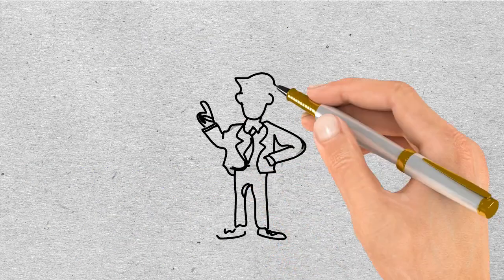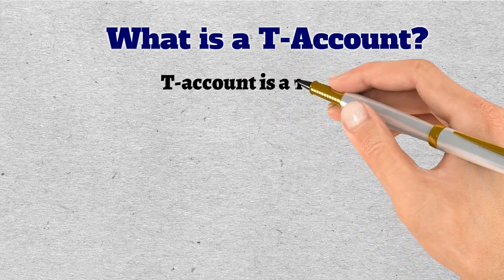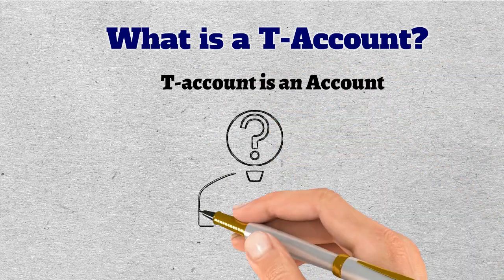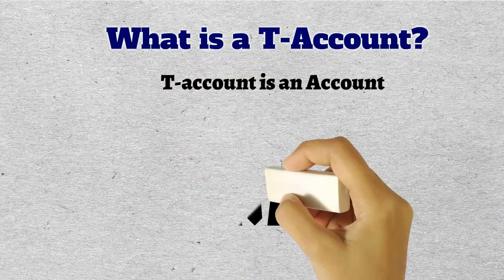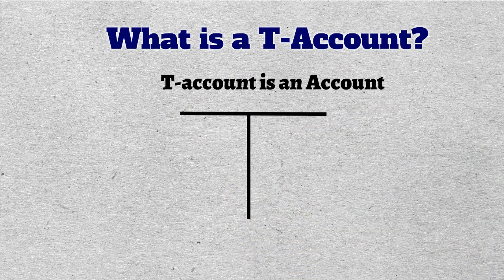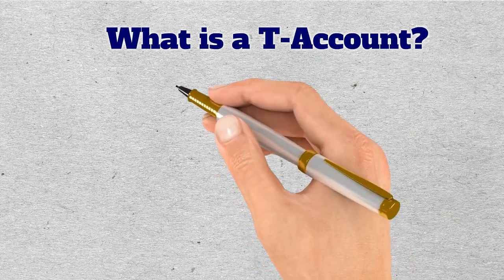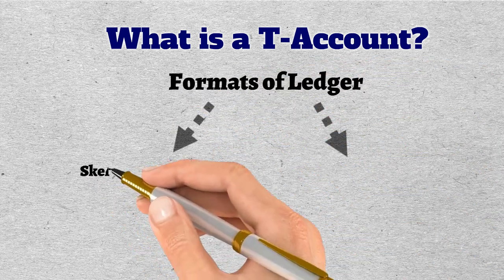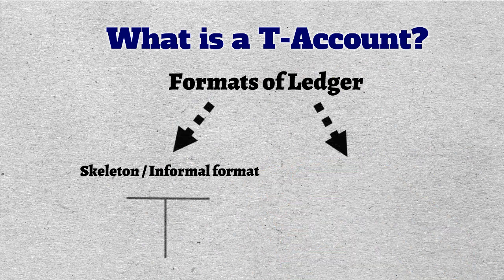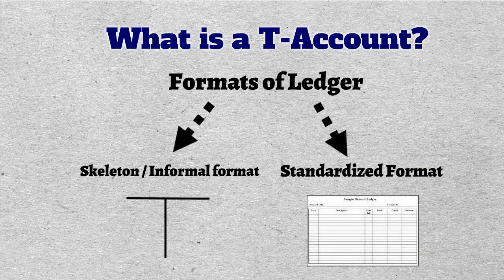Now let's discuss the T account. What is a T account? In simple words, a T account is an account whose shape looks like the alphabet T — that is why we call it a T account. However, it is formally known as a journal ledger. There are two main formats of the ledger: the skeleton or informal form is a T account, and the standardized format is called a general ledger.